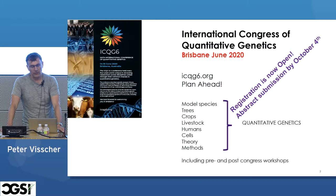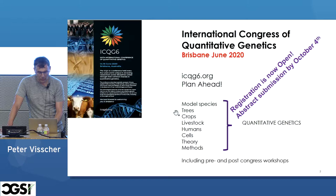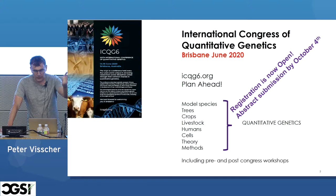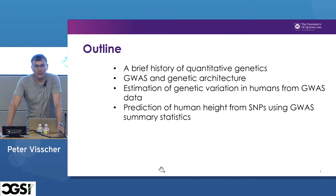That's a wonderful conference which brings together people from different disciplines that you might think are completely separate: people working in model species, in trees and crops and livestock, human disease and human traits, genetics in individual cells, and theory and methods, which is the topic today. If you want to know more about this conference, we'll be offering travel scholarships. Talk to Naomi Rae, who is the chair of the meeting.